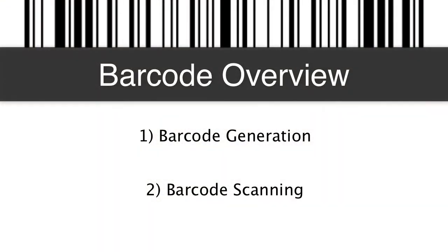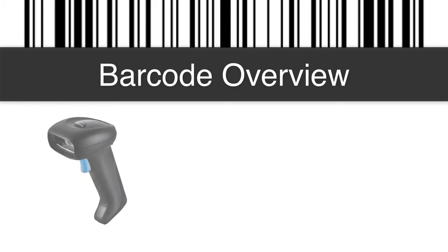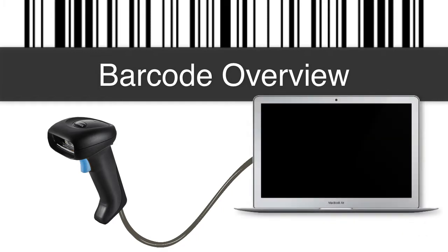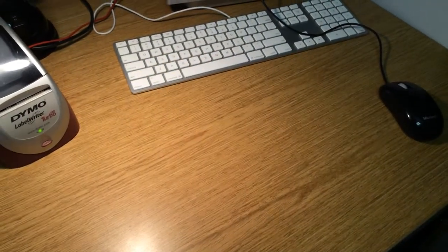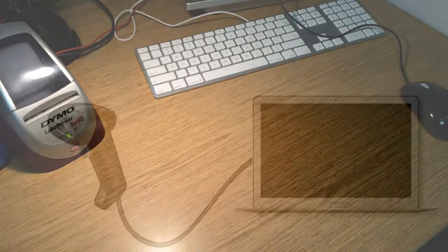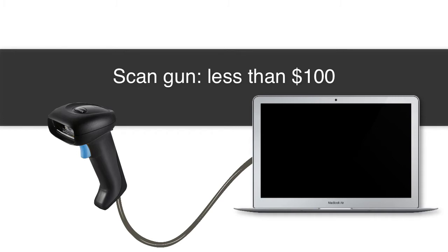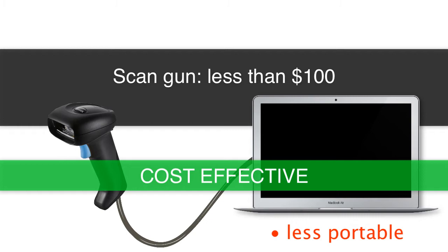There's been the long-standing capability of using a USB scan gun with a desktop computer, portable laptop, or even a MacBook Air to go out and scan and capture barcodes for high-speed data scanning. USB scan guns are pretty inexpensive, typically less than $100. The potential downside is that the laptop and USB scan gun combo is not necessarily the most portable option, though it is cost-effective since most people already have laptops.